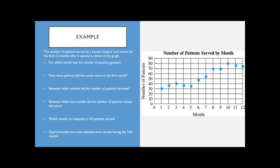For which month was the number of patients the greatest? The highest point is at month 10, so the answer is month 10. You could say October, but technically we don't know when the center opened — it says the first 12 months after opening, so we don't know if month one is January. It's best to just write month numbers in this case, since we don't know the exact calendar month.